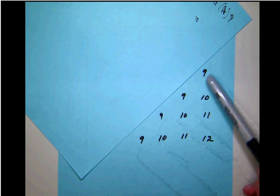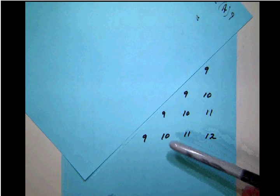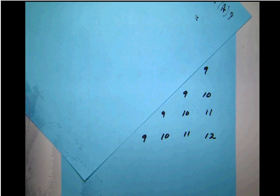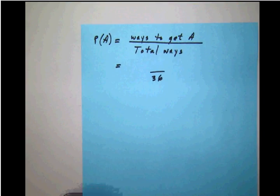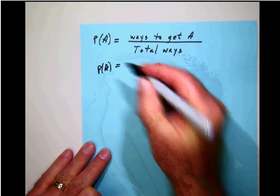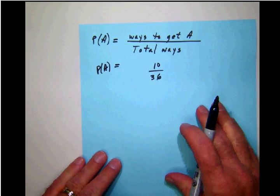So let's just count them. We can see that we have one, two, three, four, five, six, seven, eight, nine, 10 of those all together. So our probability that we're going to want then is going to be this fraction 10 out of 36. So the probability of A in this case, the numbers here that are greater than 8, are going to be 10 out of 36.